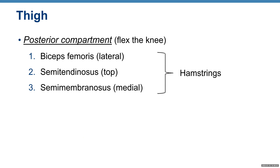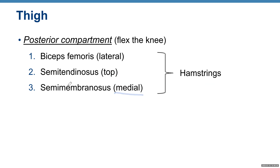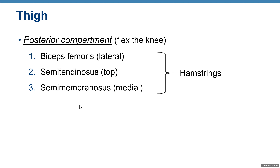Posterior compartment flexes the knee and includes the hamstring group. Hamstrings are made of three muscles: biceps femoris on the lateral side, semitendinosus, and semimembranosus on the medial side. Semimembranosus has an M to help remember it's on the medial side; semitendinosus has a T to remember it's on top; and if semimembranosus is medial, then biceps femoris is lateral.